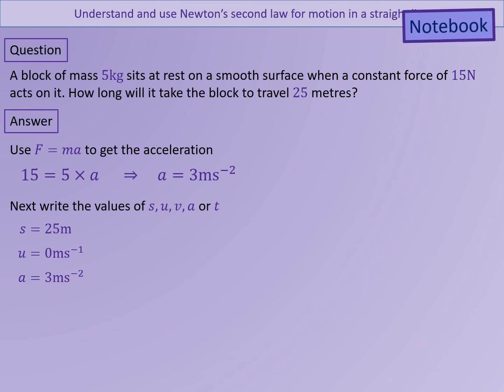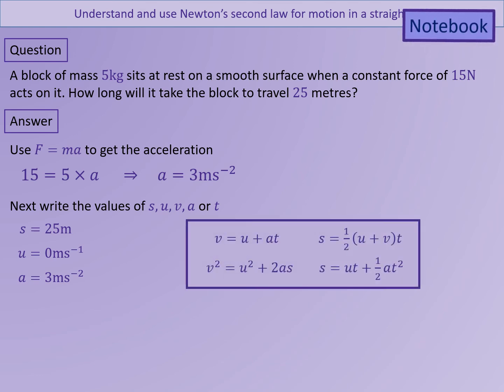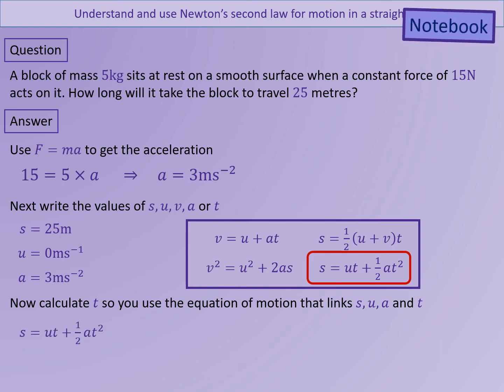We want to know the time taken in this situation. So we are going to use the formula that links S, U, A and T. Substituting in S equals UT plus a half AT squared. This is a quadratic equation, which we can solve to get T equals 4.08 seconds.